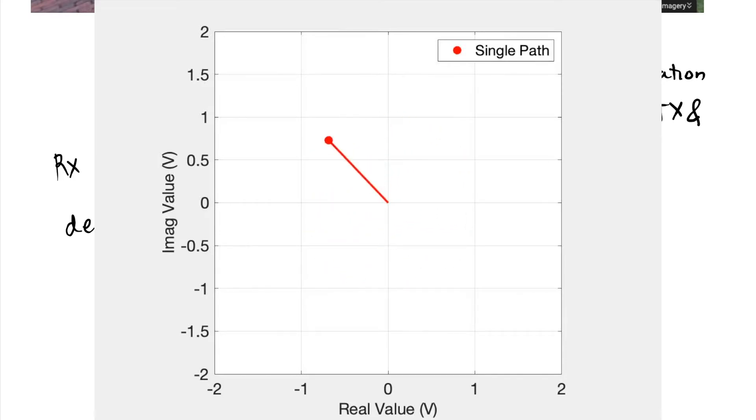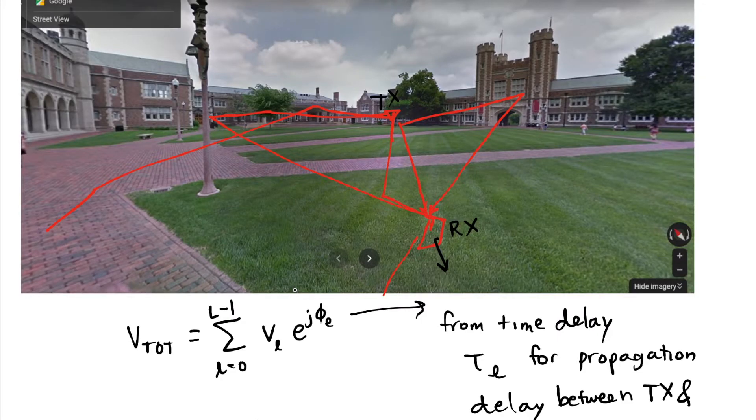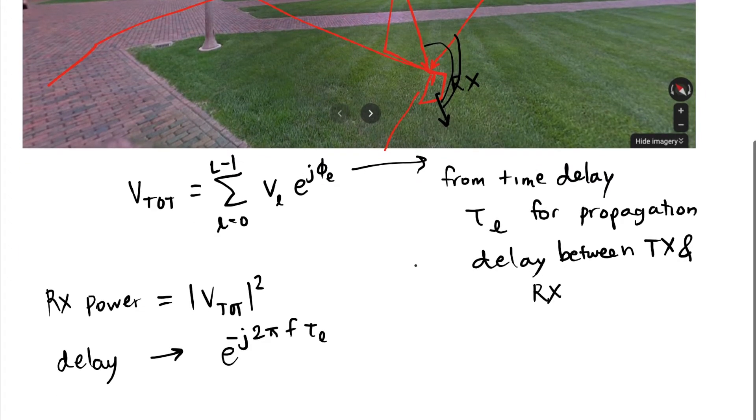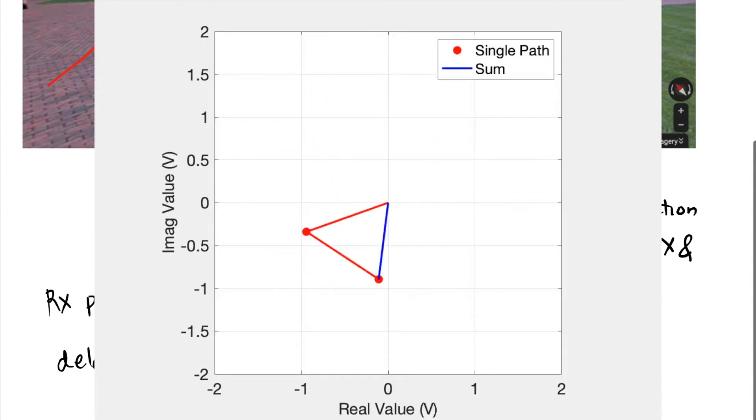Now let's consider when I have two paths. My movement has a different angle with respect to the angles of these two paths. The rate of change for tau sub l for these two paths is proportional to the cosine of the difference in the angle of arrival and the angle of my motion. These two different multi-path components will rotate around the origin at different rates compared to each other.